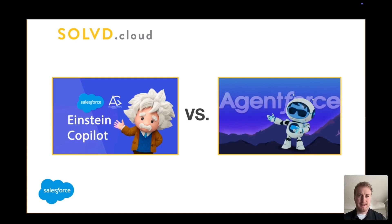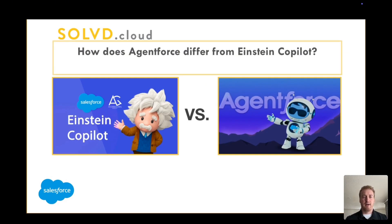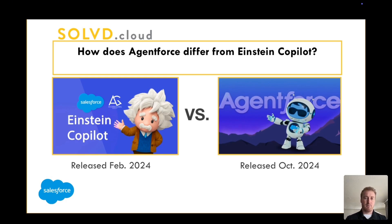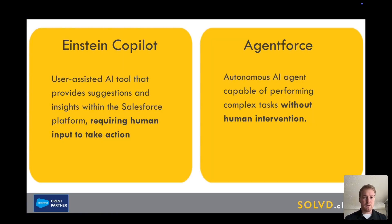My name is Augment, I'm a Salesforce consultant for Solved, and today we're going to be talking about the differences between Agentforce and Einstein Copilot. Einstein Copilot was released in February of this last year and Agentforce was released in October. There is a misconception that people think Agentforce replaced Einstein Copilot, but that's not the case — they complement each other and have different roles in the CRM.